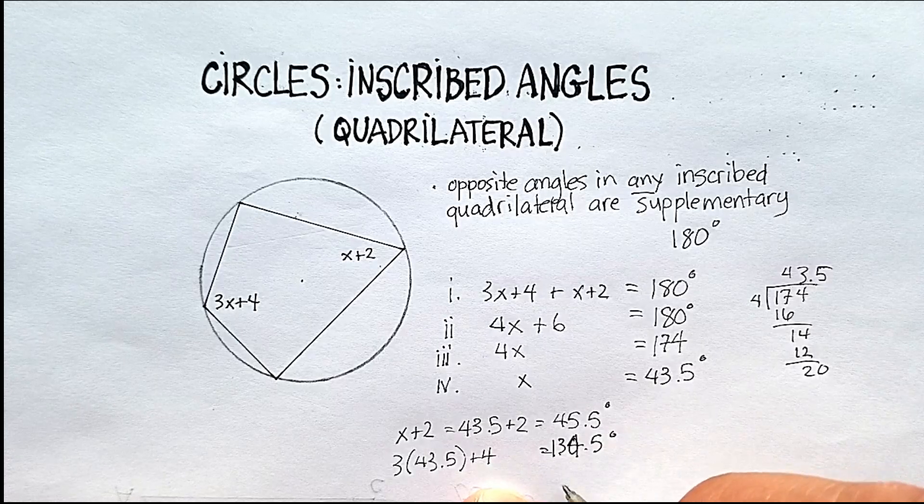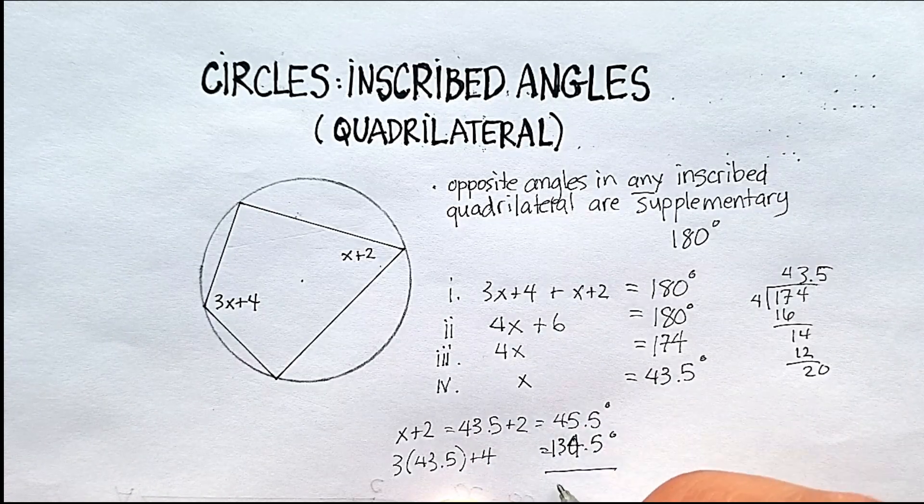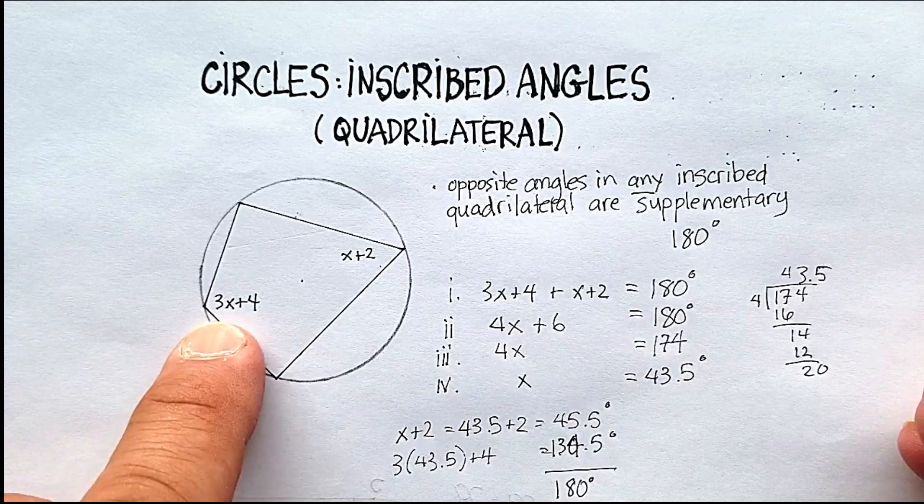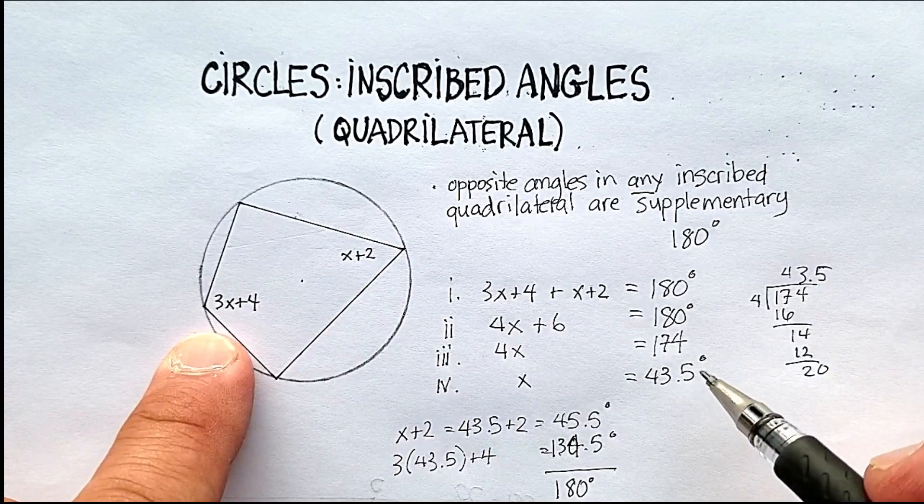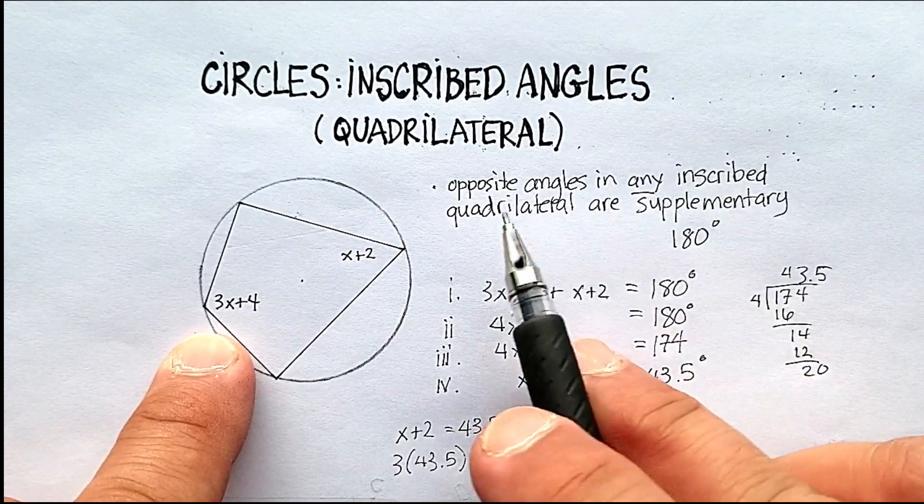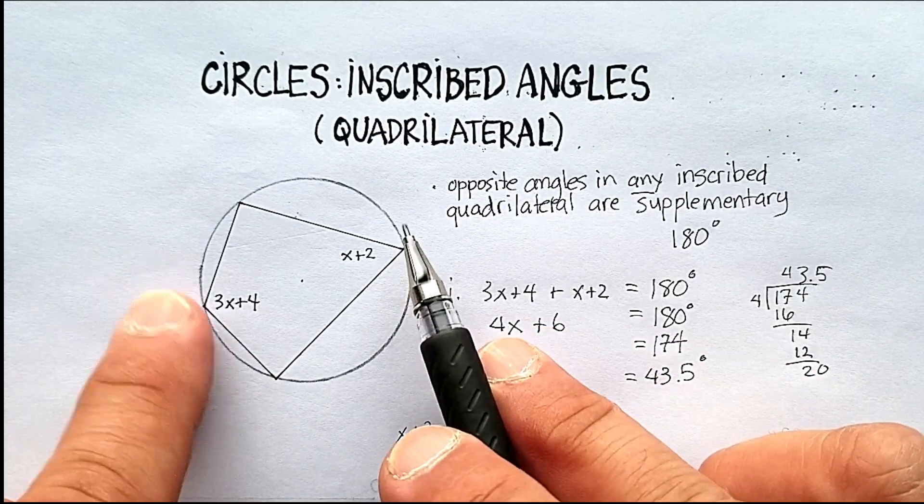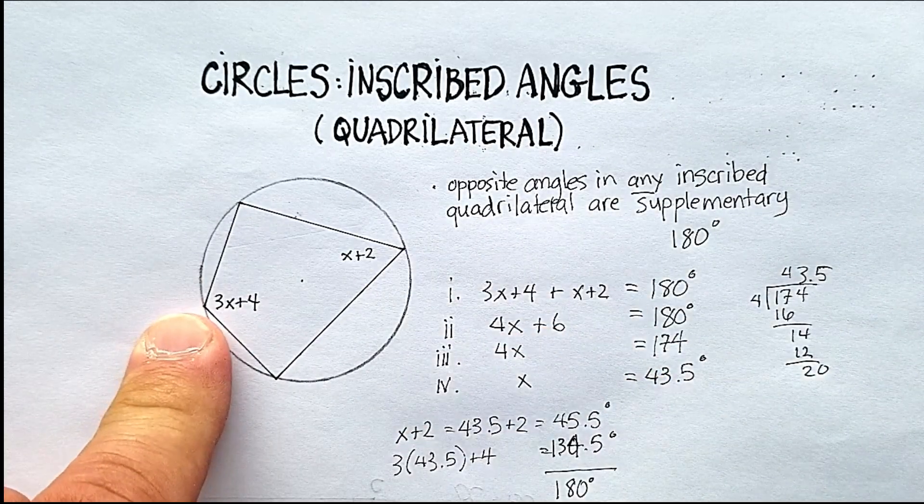0, 10, 8, 180 degrees. Those are supplementary. So again, opposite angles in any inscribed quadrilateral are supplementary or equal 180 degrees. Hope that was helpful.